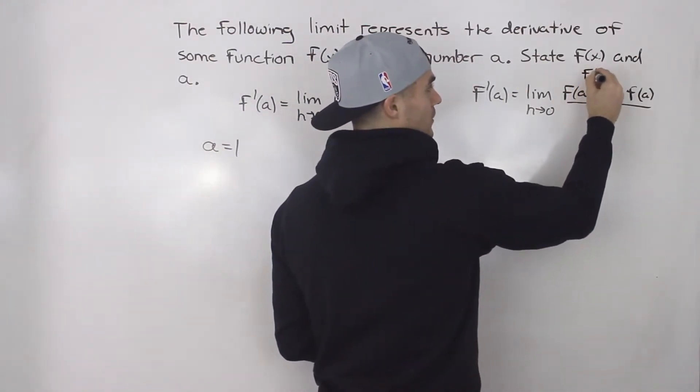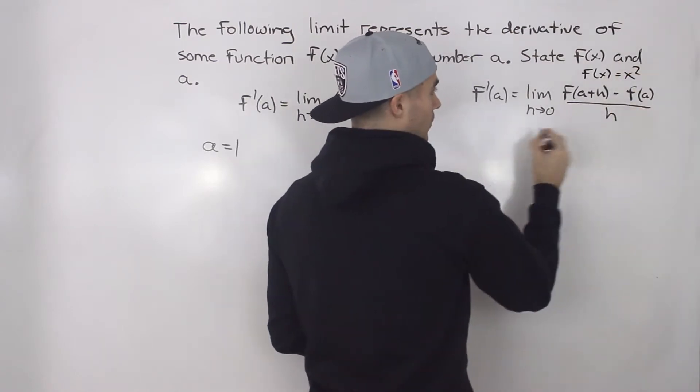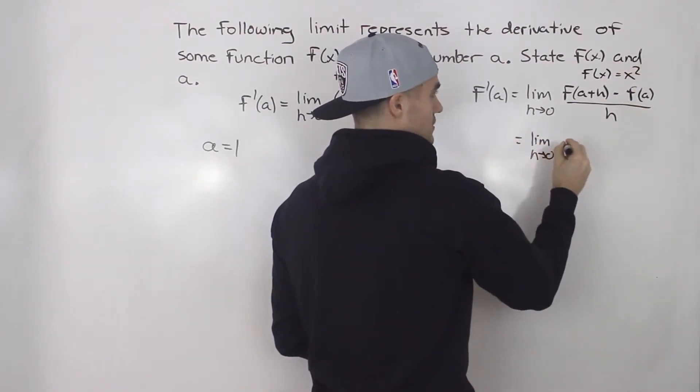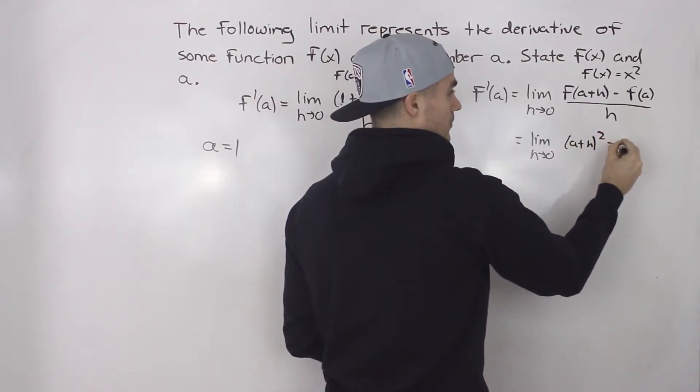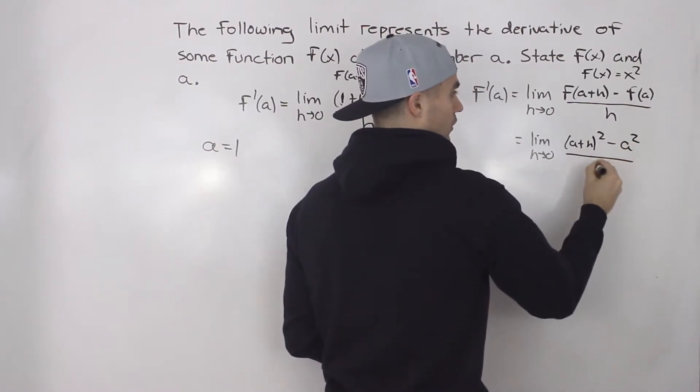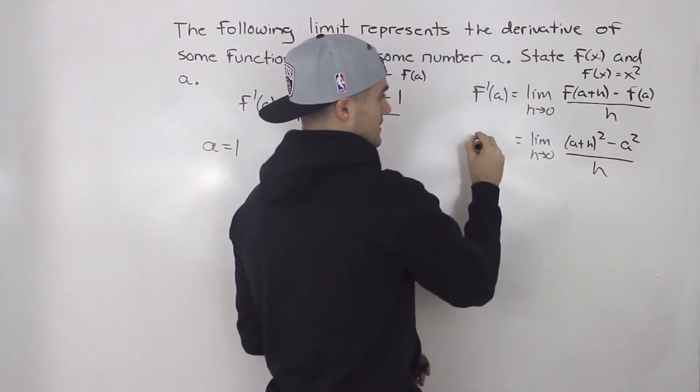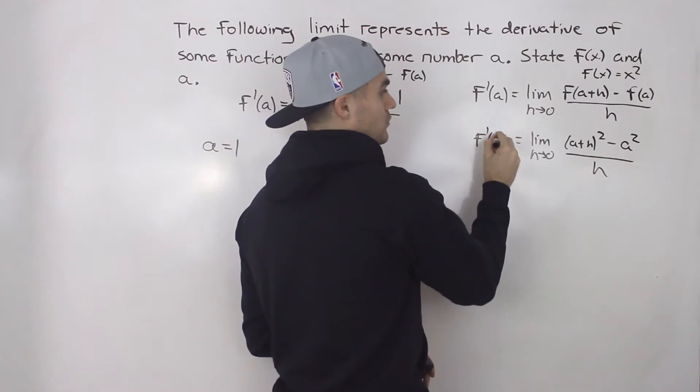Then our next line would be the limit as h goes to 0 of (a+h)^2 - a^2 all over h. And let's say we're finding the derivative at an a value of 1. Then instead of a, we would be writing 1 here like that.